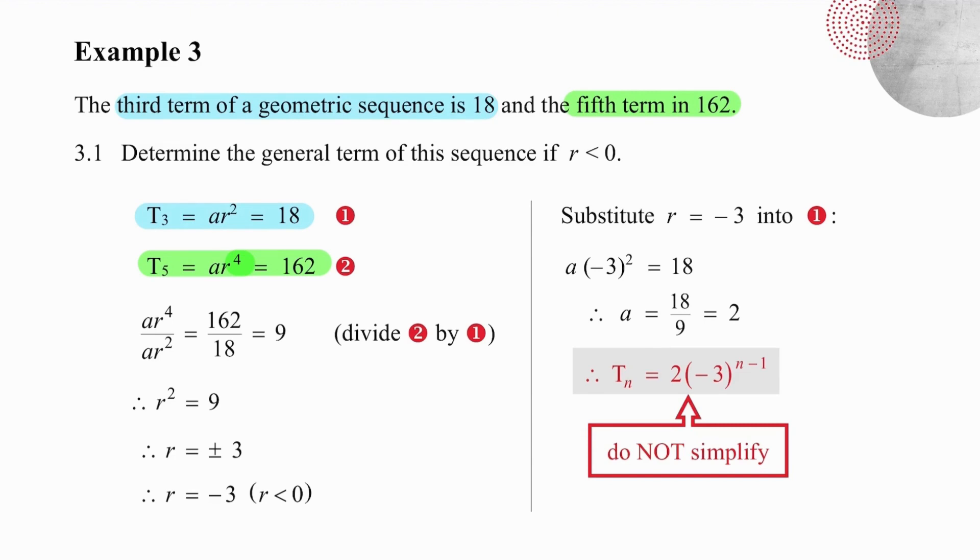Once you've got that written in the detail that's needed, the question becomes quite manageable because you divide always with the bigger exponent on top. So if you put ar to the 4 on top and ar squared at the bottom, and then you match the values that you have for those terms, you simply have to divide 162 by 18 to get r squared equal to 9. Remember, when you square root, you must take plus or minus 3. And now, because the question specifies that r is negative, we choose the negative answer only.